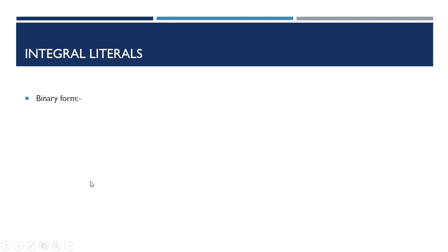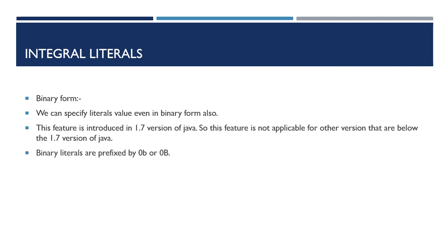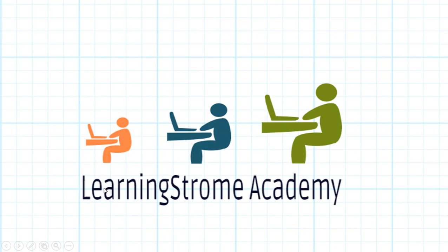Now let's talk about another form: binary. We can also represent an integer literal in binary form. The allowed digits are 0 and 1. This feature is available in Java version 1.7 and higher — below that this feature will not work, so keep that in mind. Whenever I want to represent a binary integer literal, it is mandatory to prefix it with 0b or 0B. Both examples shown are valid binary literals.